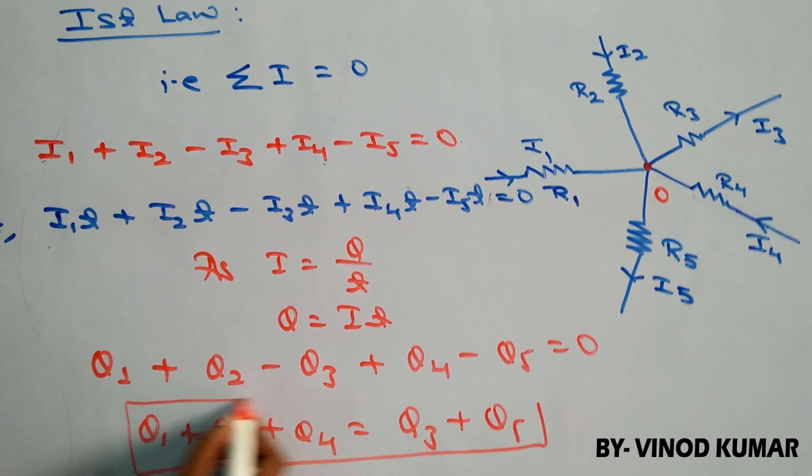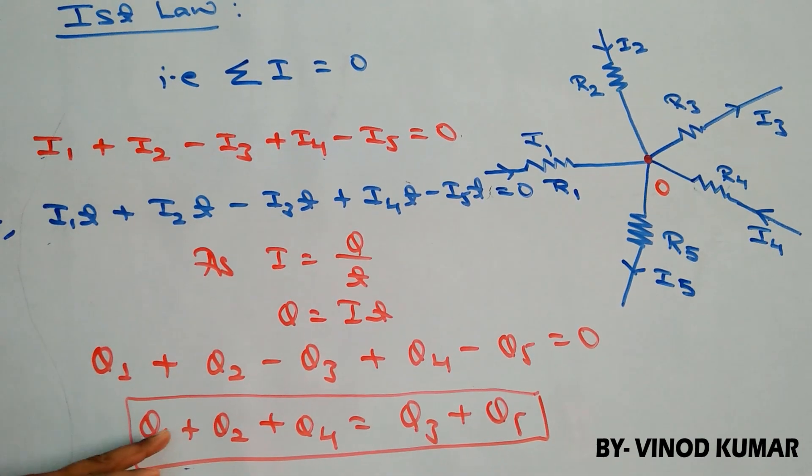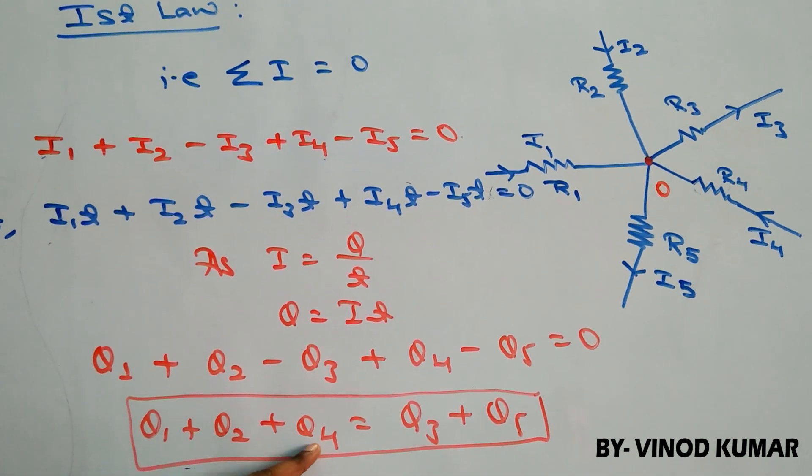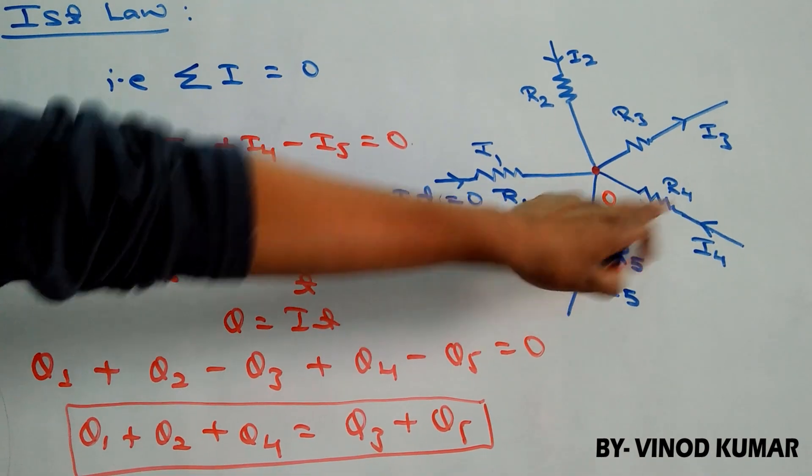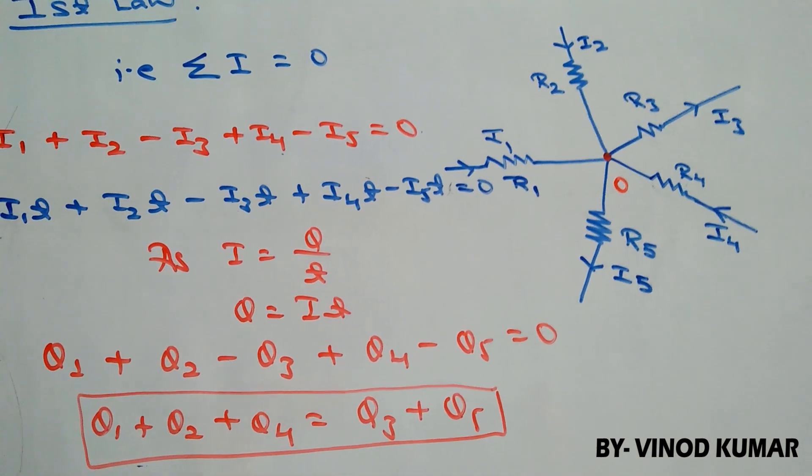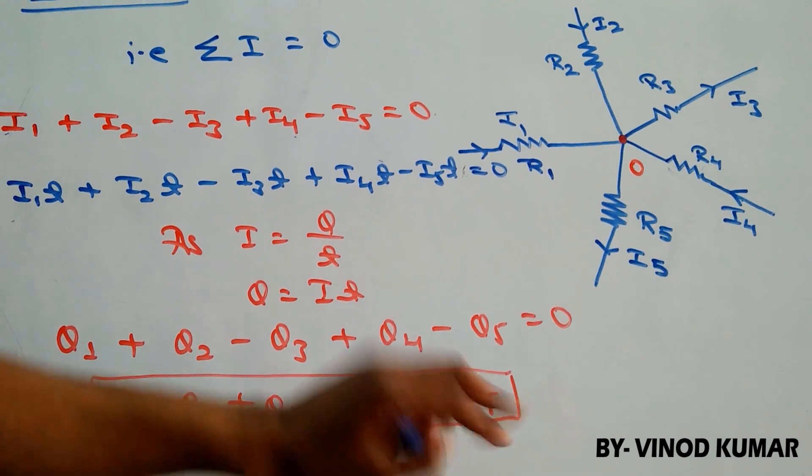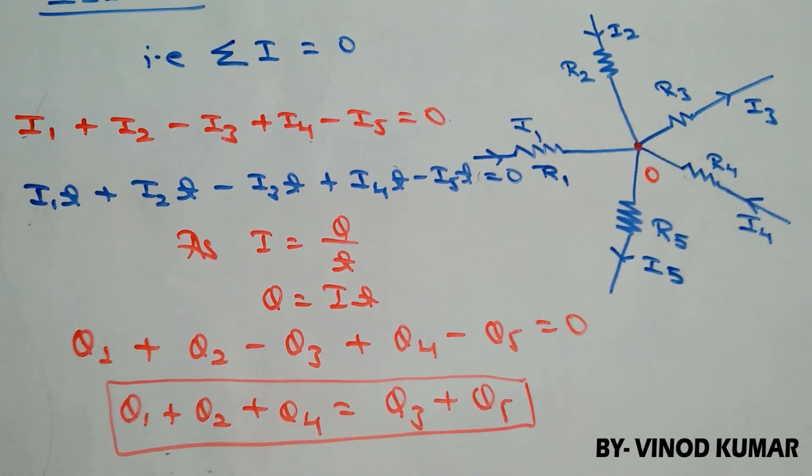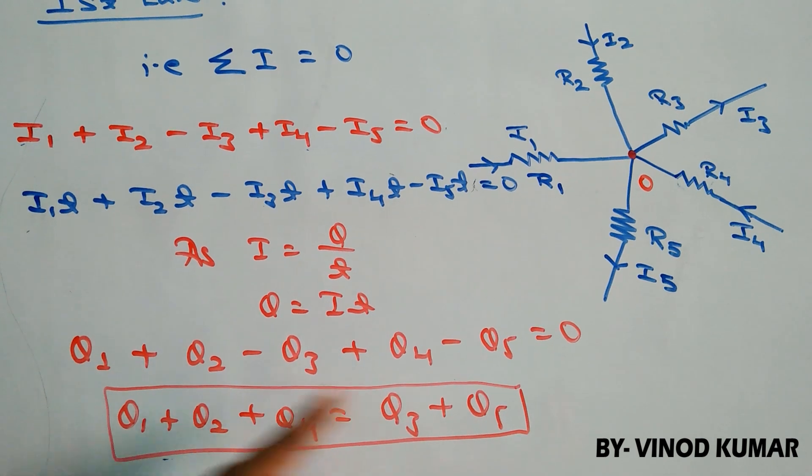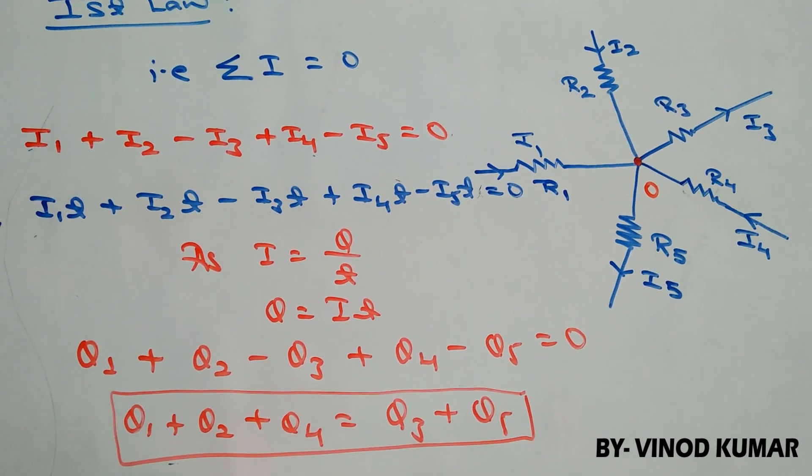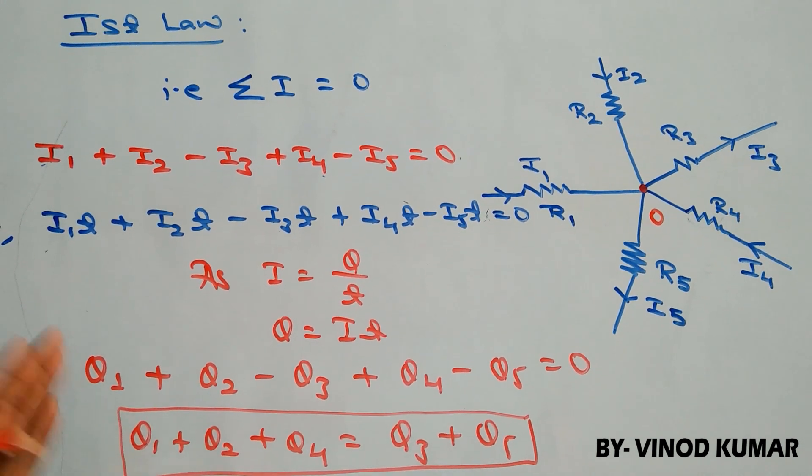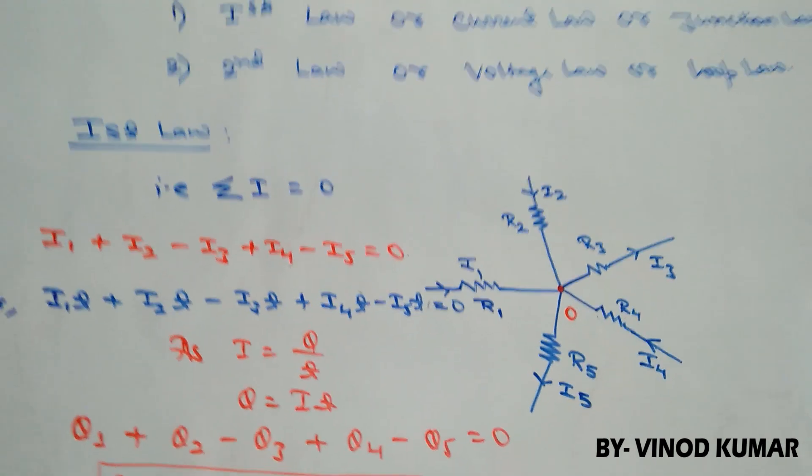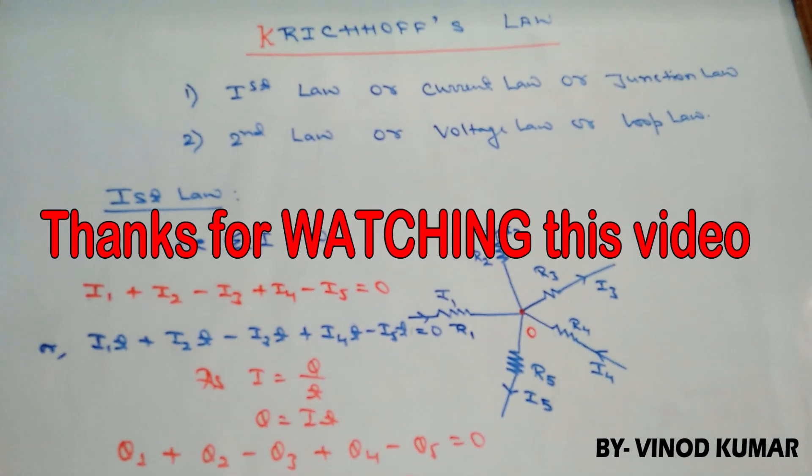It indicates that the charges Q1, Q2, Q4 are moving towards the junction and Q3, Q5 are moving away from the junction and both are equal. How much charge is moving towards the junction is equal to the charge leaving the junction. That's why this law is based on law of conservation of charge. Thank you, friends.